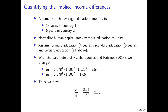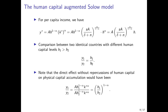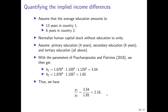In country 2, we also have 4 years of primary education — the same first term — but then only 2 more years of secondary education and no tertiary education on average. Multiplying that out gives a human capital factor of 1.65. Therefore, dividing per capita income in country 1 by per capita income in country 2, according to the formula derived earlier, country 1 should have a higher income than country 2 by a factor of 2.16.